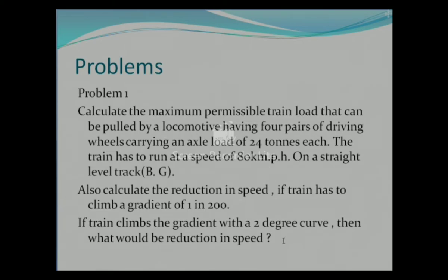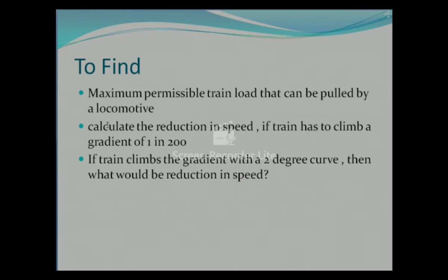I have taken a problem from the Aurora and Saxena textbook and dissected it into three parts. First, we have to find the maximum permissible train load that can be pulled by a locomotive. Second, we have to calculate the reduction in speed if the train has to climb a gradient of 1 in 200. Third, if the train climbs the gradient with a 2-degree curve, what would be the reduction in speed?